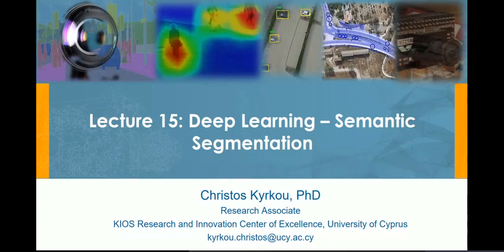In this lecture we'll look at semantic segmentation with deep learning, which attempts to segment images into regions that belong to a particular class. We already saw a form of semantic segmentation in a previous lecture using clustering techniques like k-means, and today we will see how we can tackle this with a deep learning approach.